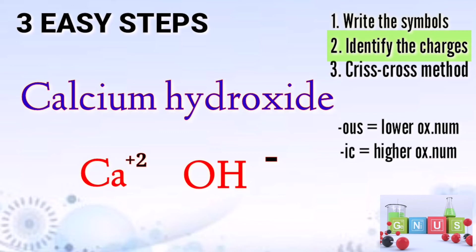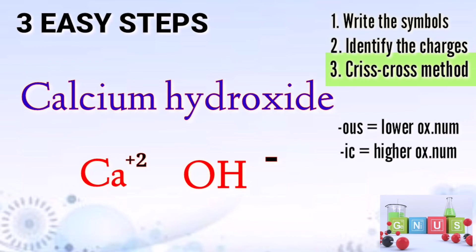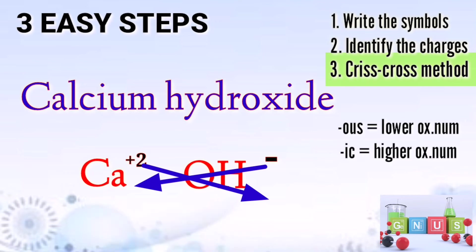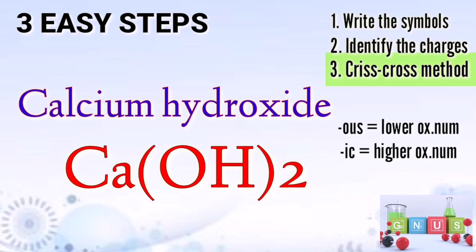After identifying and assigning charges to our element or compound, we can now proceed to the third step: the criss-cross method. The criss-cross method simply means exchanging its oxidation number and it becomes its subscript. Therefore, positive 2 will become the subscript of our hydroxide, and negative 1 will become the subscript of our calcium. Always remember to remove the positive and negative sign. The formula for calcium hydroxide is Ca(OH)₂.